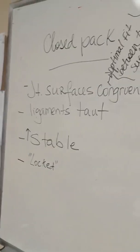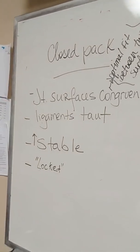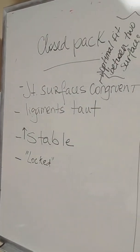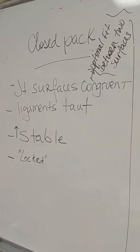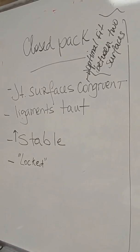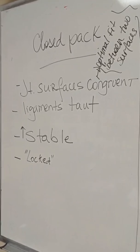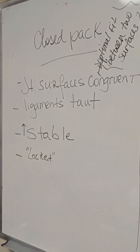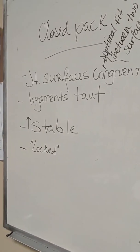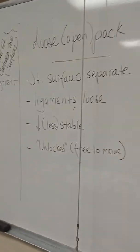When a joint is in a closed pack position, the joint surfaces are congruent — meaning there's a perfect fit between the two surfaces of the joint. The ligaments are taut, nice and not loose, and the joint is more stable. You can call it 'locked.'